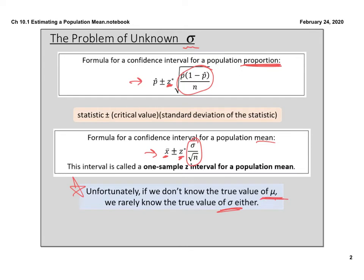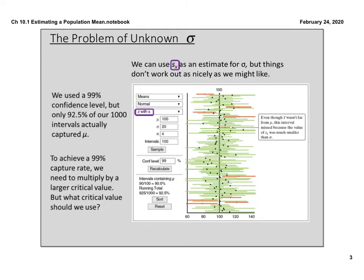Since we don't know the true value of the standard deviation, we have to use s_x, which is our sample standard deviation. So instead of using sigma, we're going to use s_x. That sample standard deviation comes from a sampling distribution. But here's the problem: when we switch from using our population standard deviation to using the sampling distribution standard deviation, our confidence intervals are not necessarily as accurate as they once were.